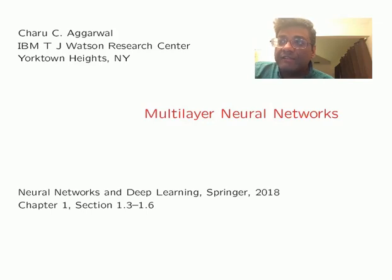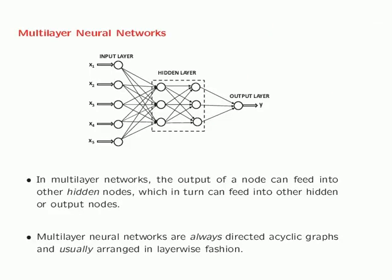In this video we will introduce multilayer neural networks. So far you have only seen a single layer perceptron in which the computation is performed only at the output layer. That is why the perceptron is referred to as a single layer network. In multilayer networks, the output of a node can feed into other nodes, and these other nodes could be either hidden nodes or they could be output nodes.